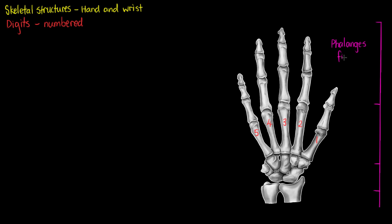So phalanges is our fingers. Then we move down to our palm which is the metacarpal bones. The last set of bones in our hand are the carpals of our wrist. Then we just connect onto our forearm.